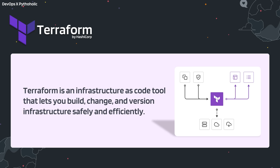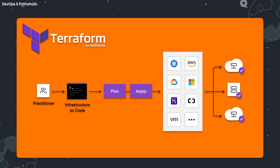Terraform is an infrastructure as code tool that lets you build, change, and version infrastructure safely and efficiently. You write code for your required deployment or create templates and deploy them using the Terraform CLI, or use Terraform Cloud to orchestrate the whole environment. As a developer or DevOps engineer, it becomes easier to understand the requirement per your architecture, plan it, and then apply the code to create resources on the cloud.